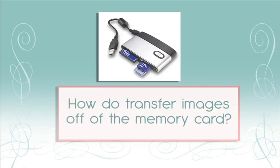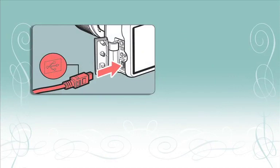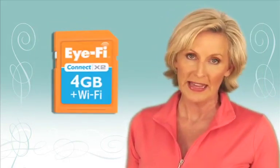Most camera and memory card manufacturers recommend formatting your memory card when it's in your camera. How do I transfer my images off the memory card? Once you've taken your images, you'll need to transfer them to your computer with a card reader or the USB cable that was included with your camera. There are also memory cards with Wi-Fi capabilities that allow you to wirelessly transfer your images from your camera to your computer or any photo and video sharing site from any Wi-Fi location.